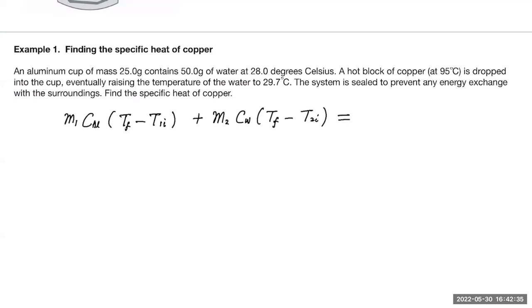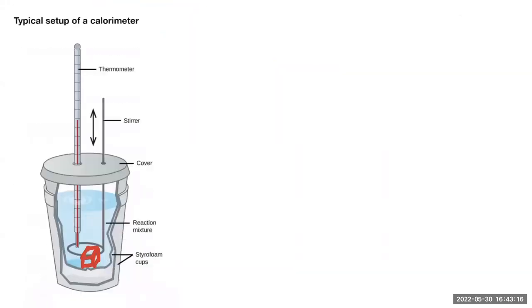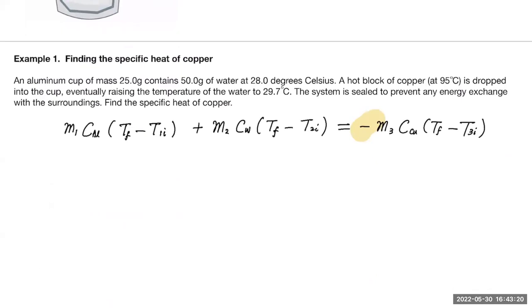The heat lost by the copper block is negative M_3 times C_copper times (T_final minus T_3_initial). If you don't want the negative sign, move this term to the left-hand side, so every term has the form mass times C times (T_final minus T_initial). Alternatively, write the copper term as M_3 times C_copper times (T_3_initial minus T_final), since T_3_initial is higher than T_final — that keeps it positive without a negative sign.